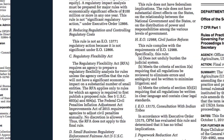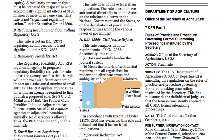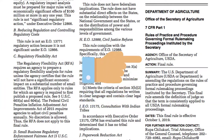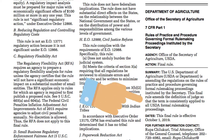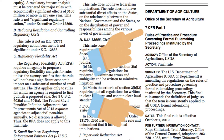A Federal Register notice describes a rule or regulation, specifies a legal authority for the regulation, details how the public can comment on the change, and states how and when the Code of Federal Regulations will be amended.